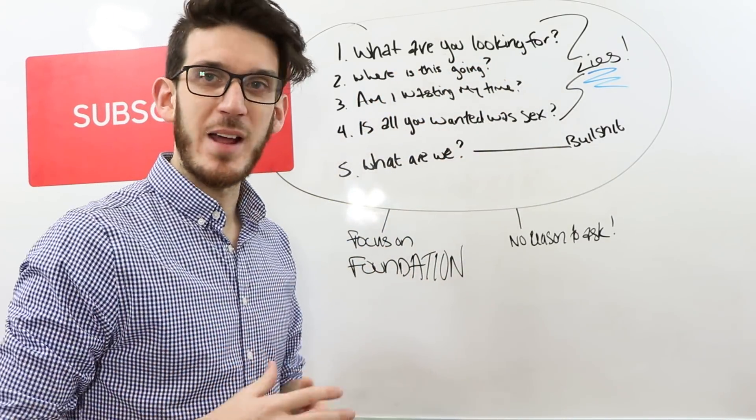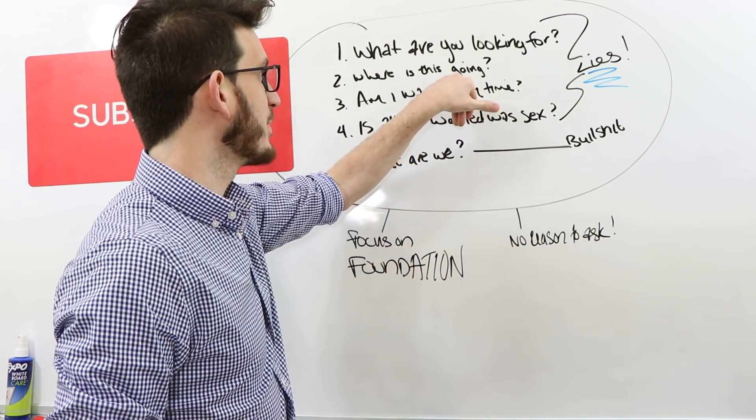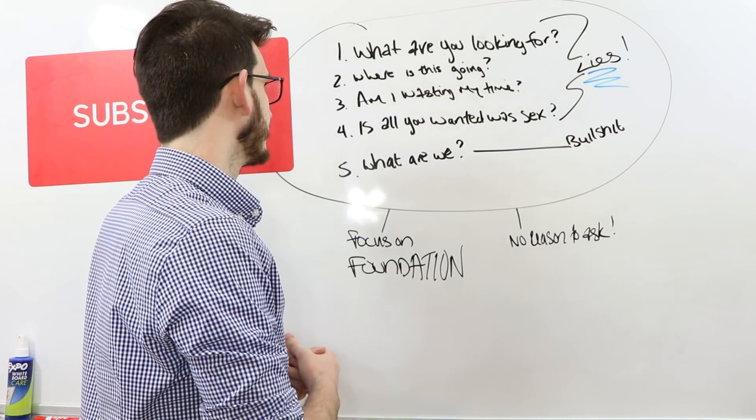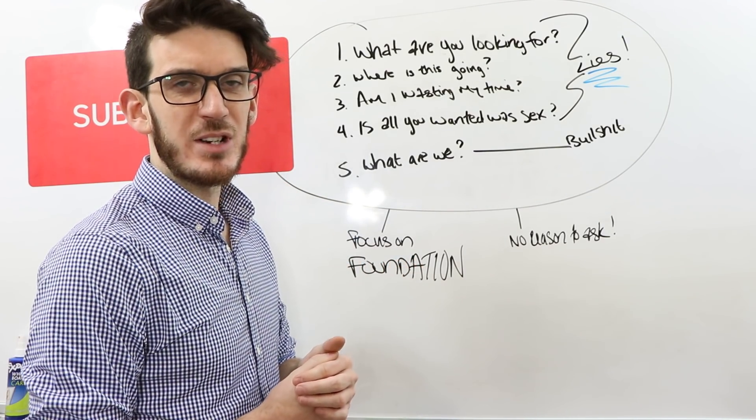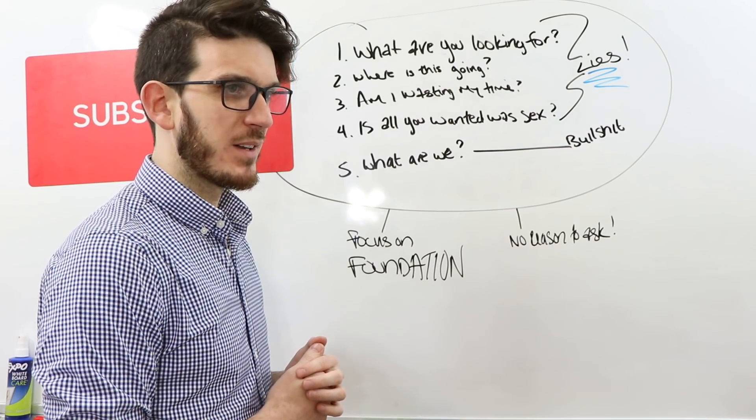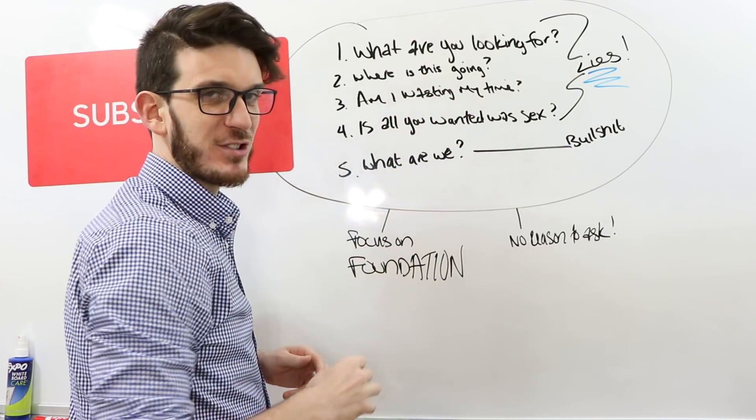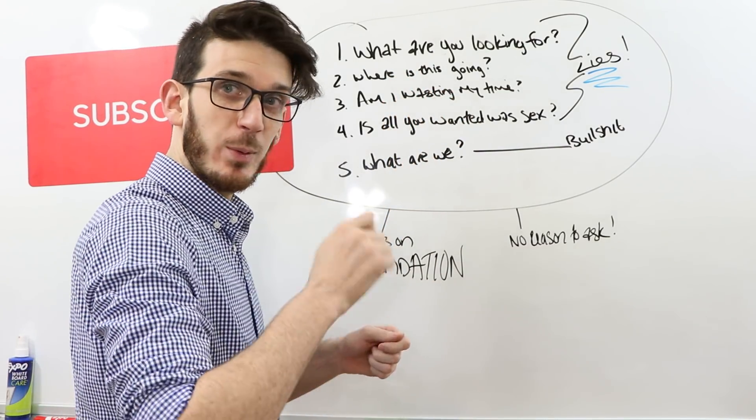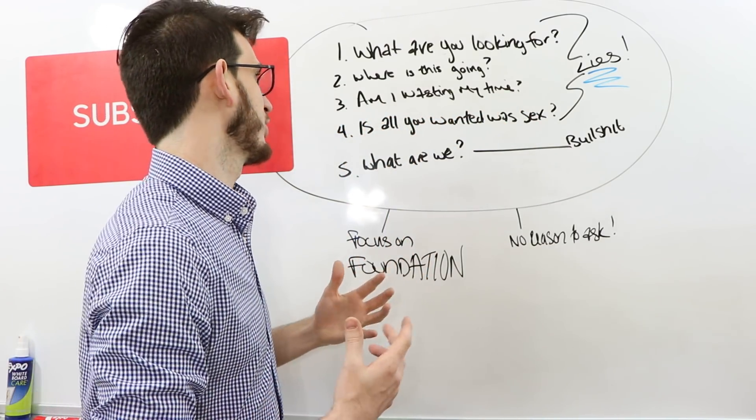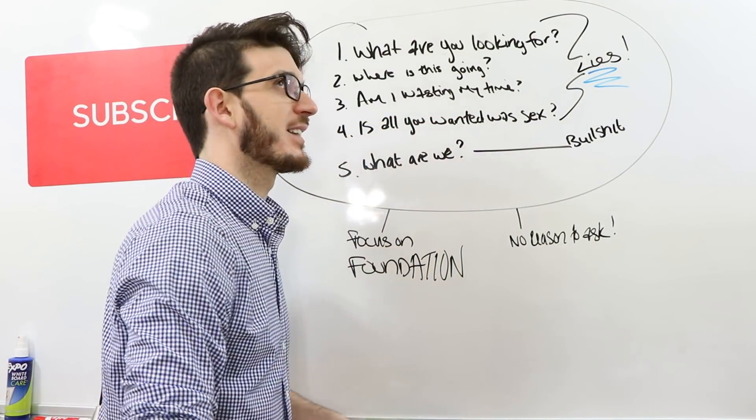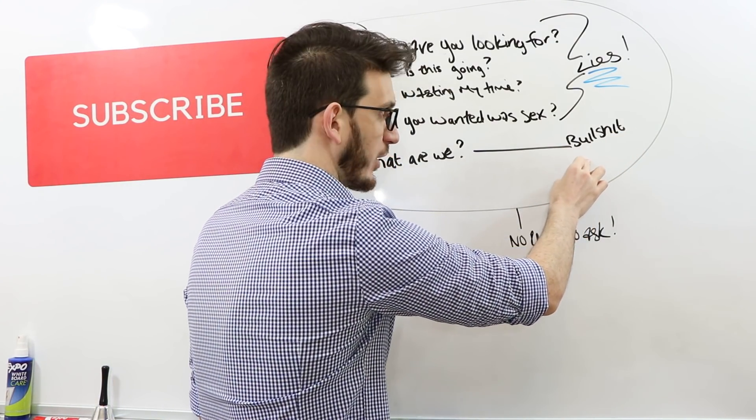So the question is basically, what are you looking for? Don't ask him that. He can lie. Where is this going? He can lie. Usually guys beat around the bush with that question. I should be putting some, I might put it on my blog. Let me know below if you want me to give you a list of canned lines that a guy uses for each of these. Because I used to use them all the time. It's actually not a joke. It's wrong. But am I wasting my time? Again, he can bullshit you. Is all you want sex? Again, he can bullshit you. And what are we? That's really where he's going to bullshit you, right?